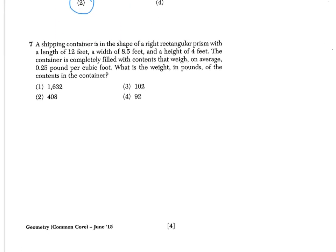Number 7 is a pretty lengthy question, and so it's important that we underline, highlight, circle, anything that we think might be helpful to answer this question. We should also sketch pictures, because we're talking about a shipping container that's in the shape of a right rectangular prism. So when I sketch this, it's going to look kind of like a tissue box. So I'm going to start with the front face, the rectangle.